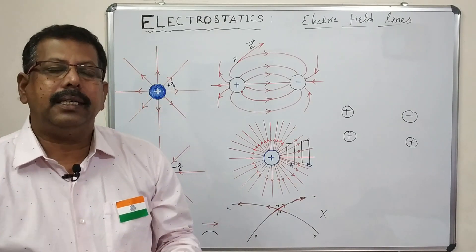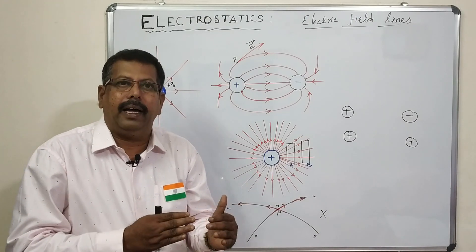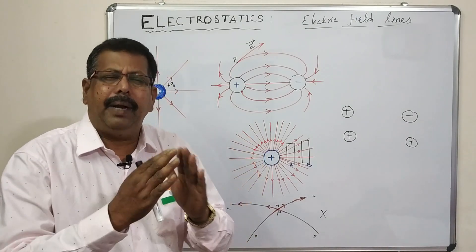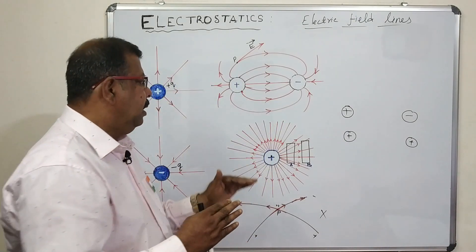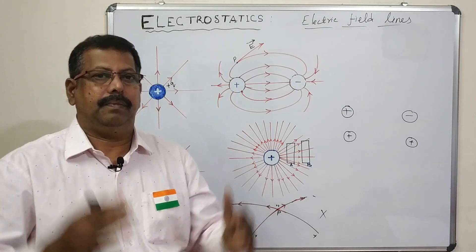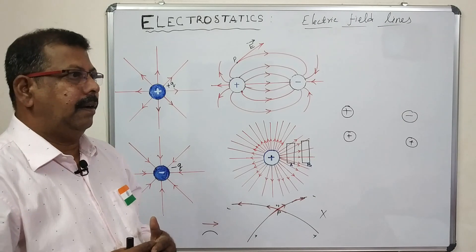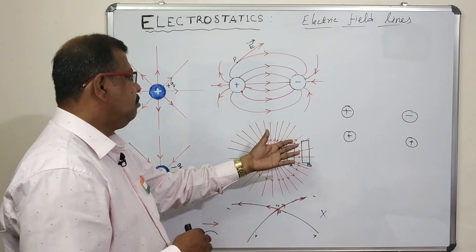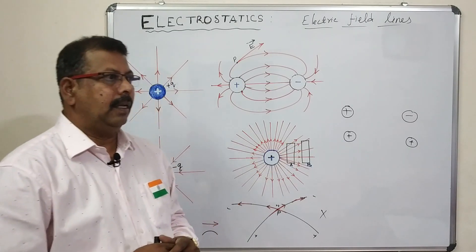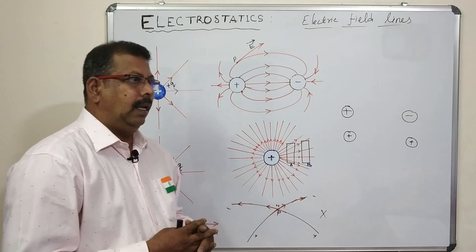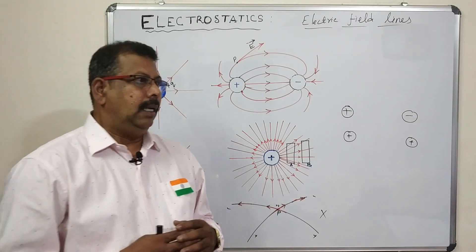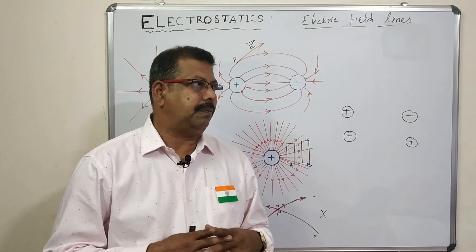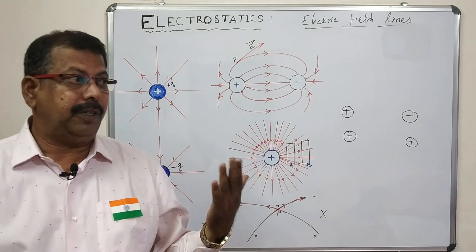The electric field lines are denser or closer together in a region where the electric field has a larger magnitude. The number of lines passing through a given surface area perpendicular to the lines is proportional to the magnitude of the electric field in that region.